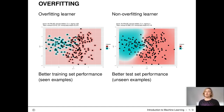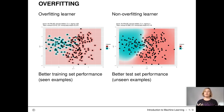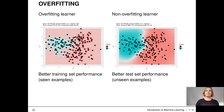The right plot shows a different model. The model on the left plot will show great performance on a training set but will be terrible if we evaluate it on a test set. The model on the right plot will probably do much better on a test set.